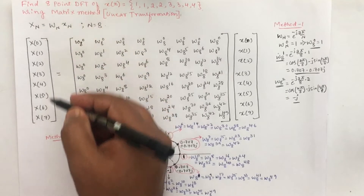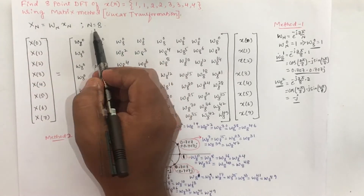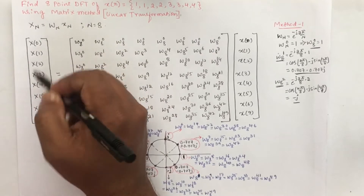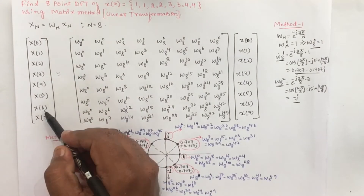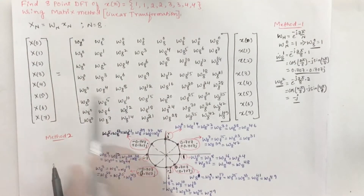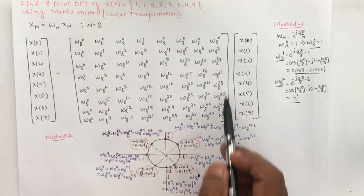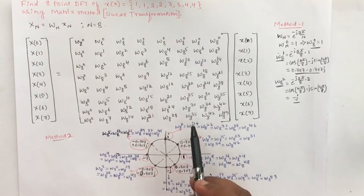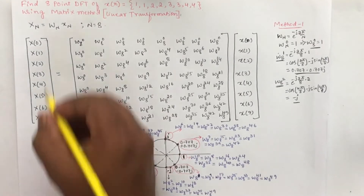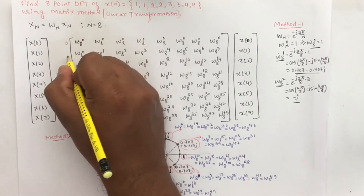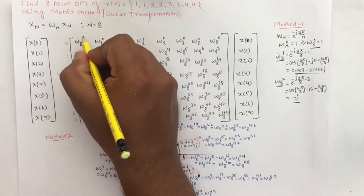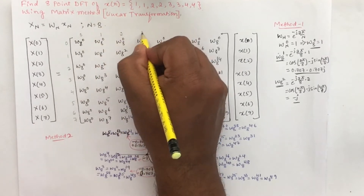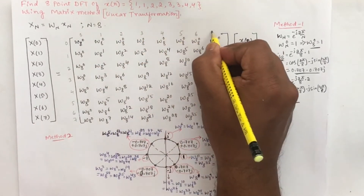So here we have written the matrix. For X[N], since it is 8-point DFT, we will write 8 values from X[0], X[1], X[2], X[3], X[4], X[5], X[6], and X[7]. For W[N], we need to write an 8×8 matrix which consists of 64 terms. To write this matrix, we can write 0, 1, 2, 3, 4, 5, 6, and 7 for both row and column indices.